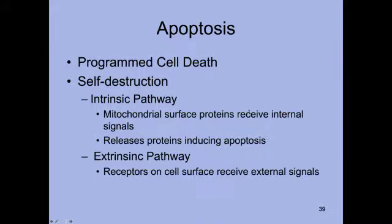That brings us to the concept of apoptosis. Cells are very good at knowing when they are done — when they've carried out their purpose or if they are mutated or not functioning properly. If something is not working properly, they turn themselves off and commit cell suicide. This type of cell suicide is known as apoptosis because it is programmed into our DNA, and the cells carry out this process of self-destruction very carefully.